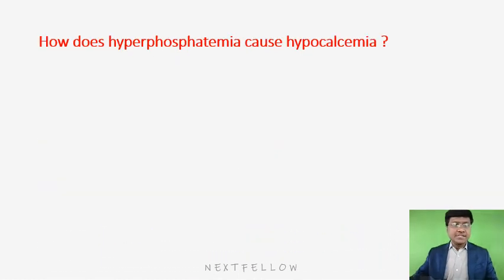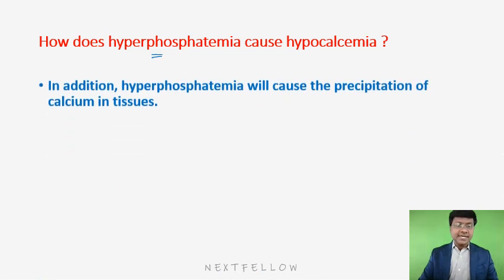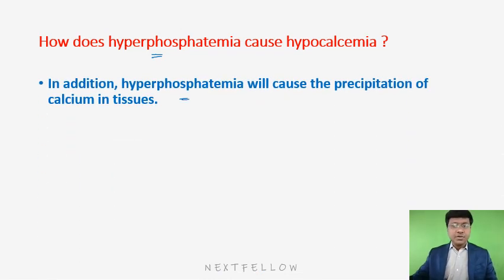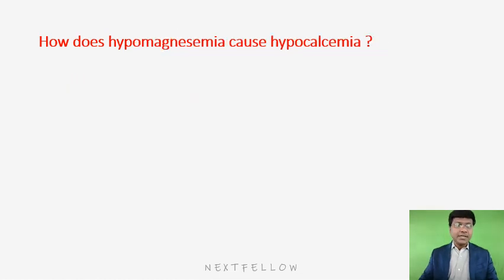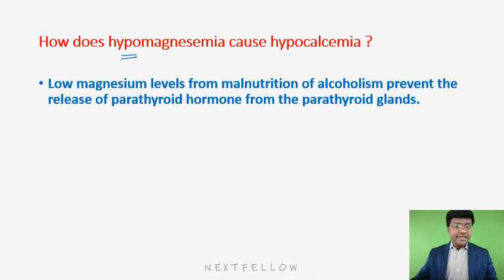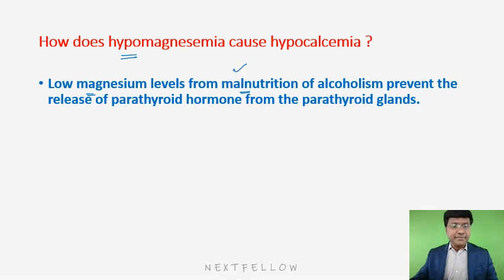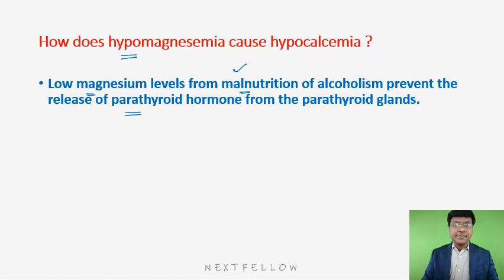Hyperphosphatemia causes precipitation of calcium in the tissues, utilizing calcium and leading to hypocalcemia. Hypomagnesemia — which can occur from malnutrition or alcoholism — causes low magnesium levels, which prevent the release of parathormone from the parathyroid gland. Without parathormone, calcium absorption from the bones does not occur, leading to hypocalcemia.